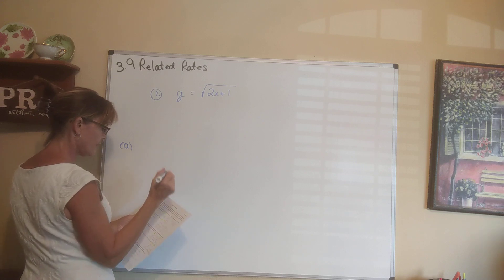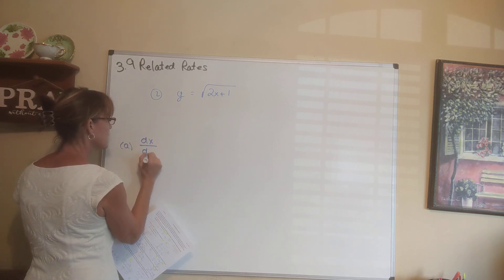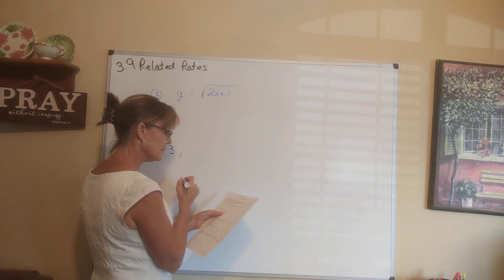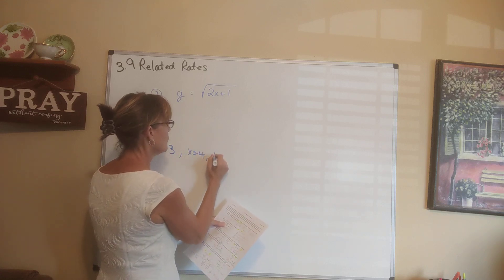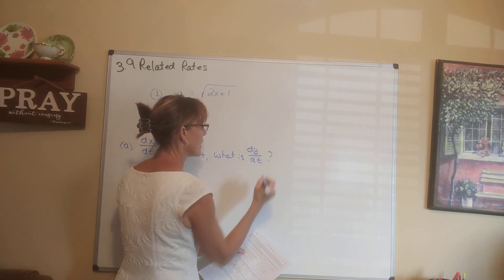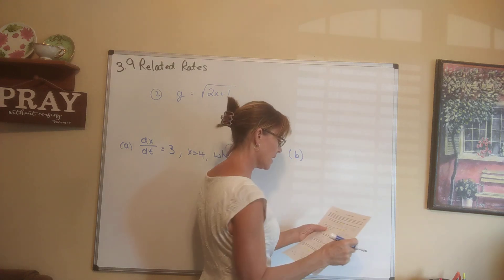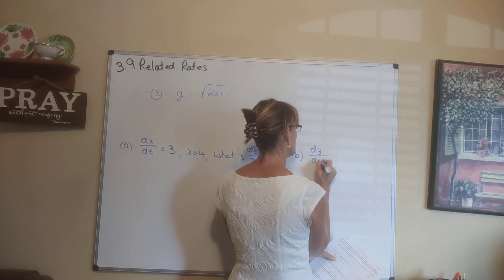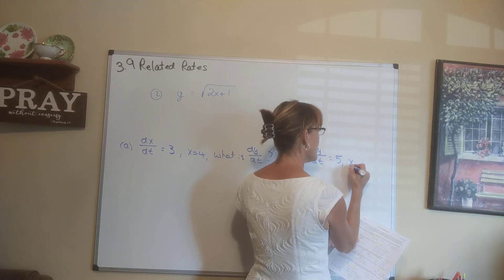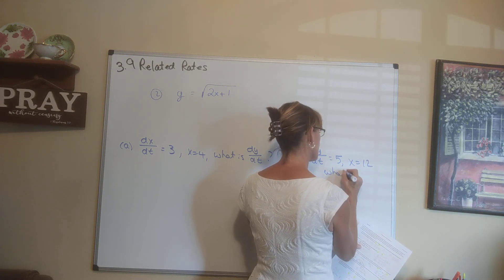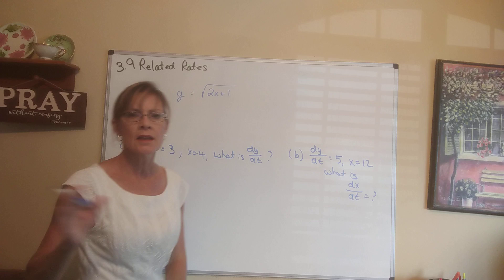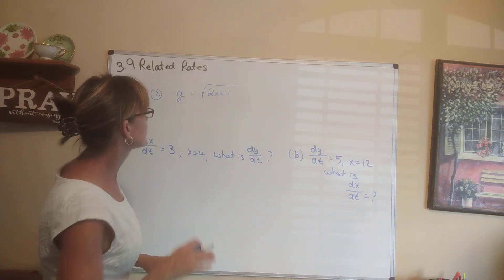Part a says: if dx/dt equals 3 and x equals 4, what is dy/dt? For part b, they ask us: if dy/dt equals 5 and x equals 12, what is dx/dt? This is not a practical problem, but it is good practice using chain rule and taking derivatives.